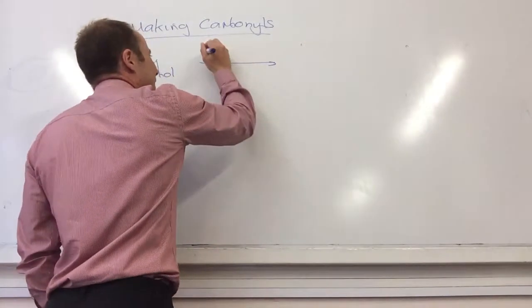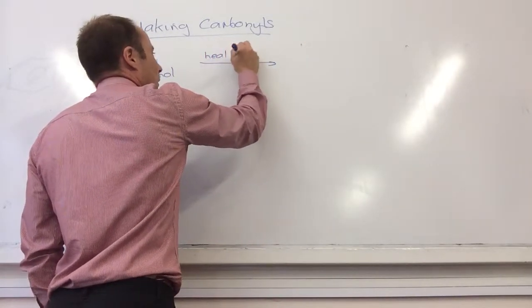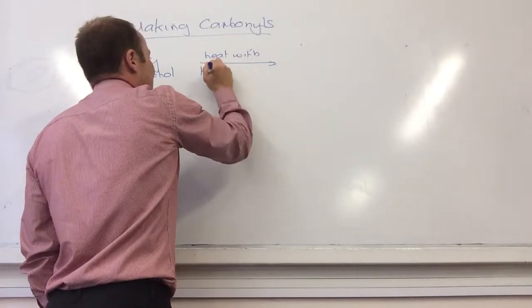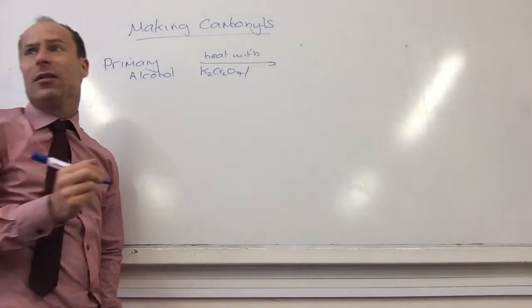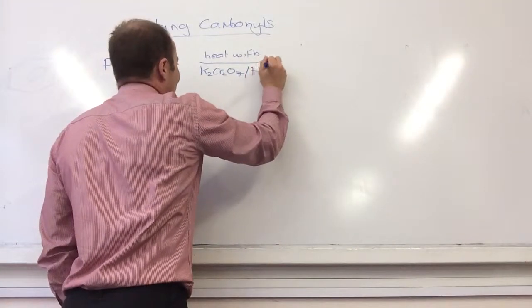I heat with, what's it called? Potassium dichromate makes it. What else do I need? Anti-H2 is more. Yeah, H+.